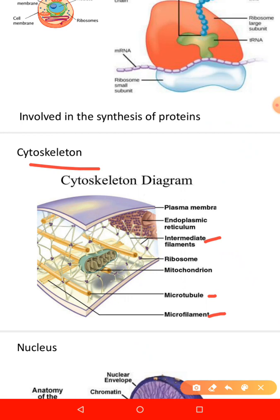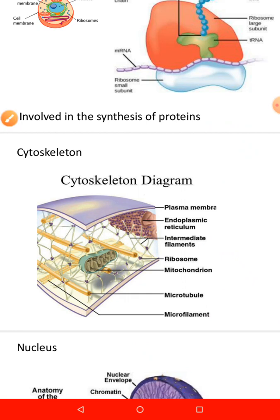Microtubules are straight, hollow, and tubular structures of the cytoskeleton. Their main functions include determining the shape of the cell, giving structural strength to the cell, acting like conveyor belts, forming the spindle fibers that separate chromosomes during mitosis, and responsible for movement of centrioles and complex cell structures like cilia.